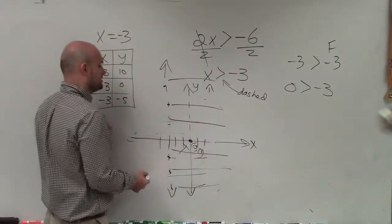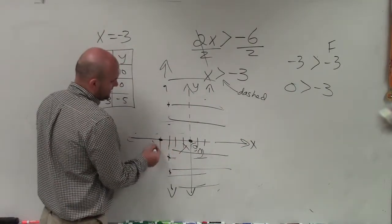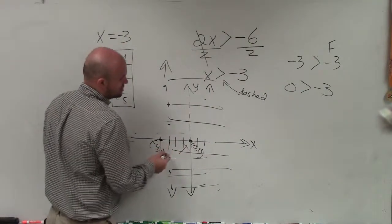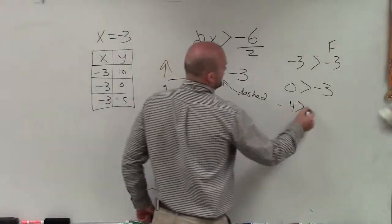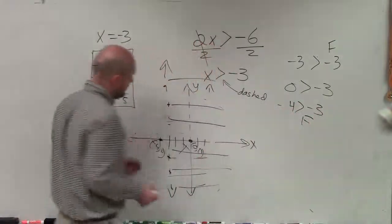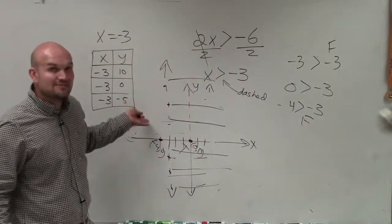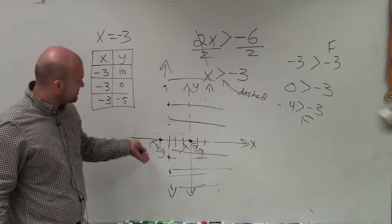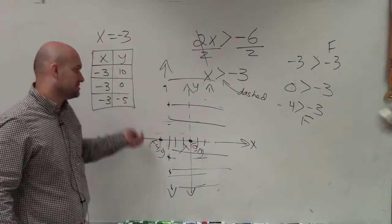That means any point to the left of the line will be false. For instance, negative 4 comma 0. And let's check that out. Is negative 4 greater than negative 3? No, that's false. That's why none of the points to the left are true. Because once one point is false to the left, that means all points to the left are false.